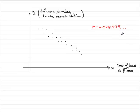What this means is that if you were to draw a scatter diagram of the distance in miles to the nearest station against the cost of a house in thousands of pounds.